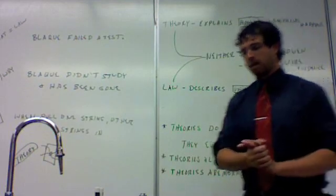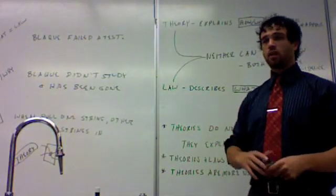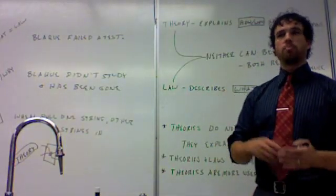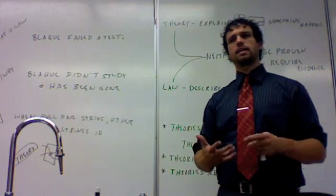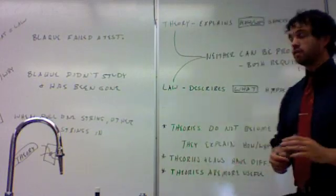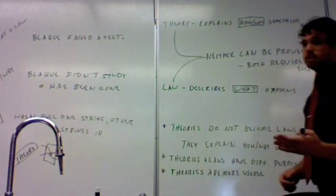For example, an example might be with gravity. We know how fast things will fall. We know that they fall. But we're not entirely sure. There's not an accepted theory of gravity. We don't know why they fall. And so, that's actually something that scientists are working on.